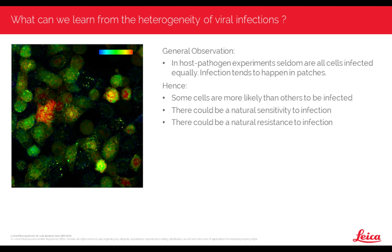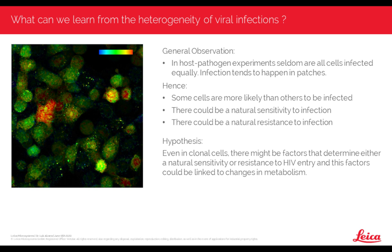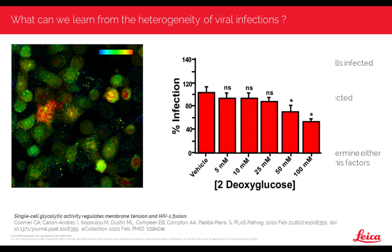We were discussing this with Sergi when I joined him in Oxford, and thought it would be really nice to have a way to look at this — this was one of the starting points for the project I'll present today. We had a hypothesis: the differences in infectivity or resistance are not genetic because all of these cells are the same. So there must be factors that determine this resistance or sensitivity, and we hypothesized that these changes could be due to metabolism.